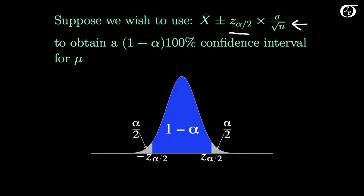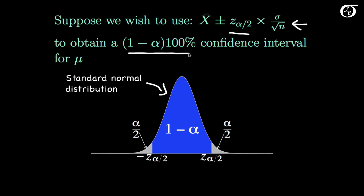The z value is based on the standard normal distribution, plotted here. If we want the confidence level to be 1-alpha times 100%, we put an area of 1-alpha in the middle of the distribution. The part left over is alpha, since the total area under the distribution is 1. We split alpha evenly into the two tails, putting alpha over 2 in the right tail and alpha over 2 in the left tail. Z sub alpha over 2 is the z value that has an area to the right of alpha over 2.